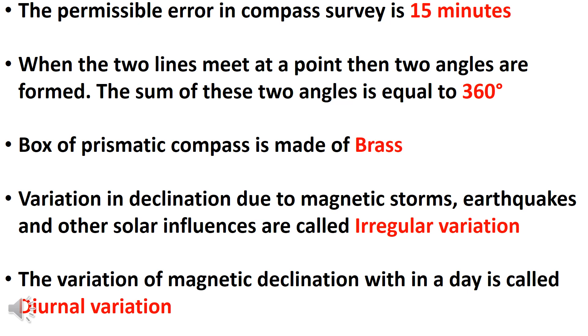When two lines meet at a point, two angles are formed. The sum of these two angles is equal to 360 degrees.